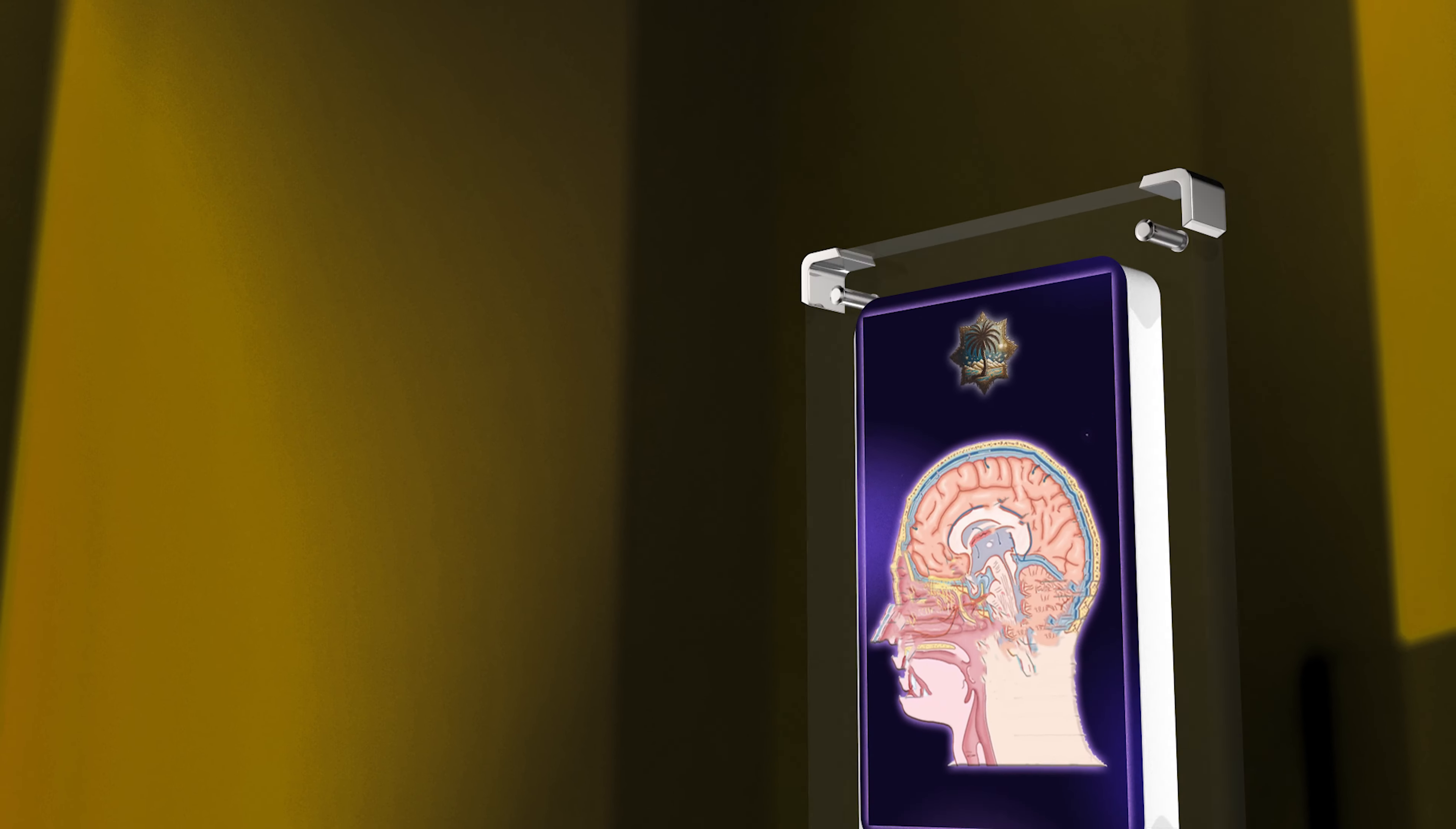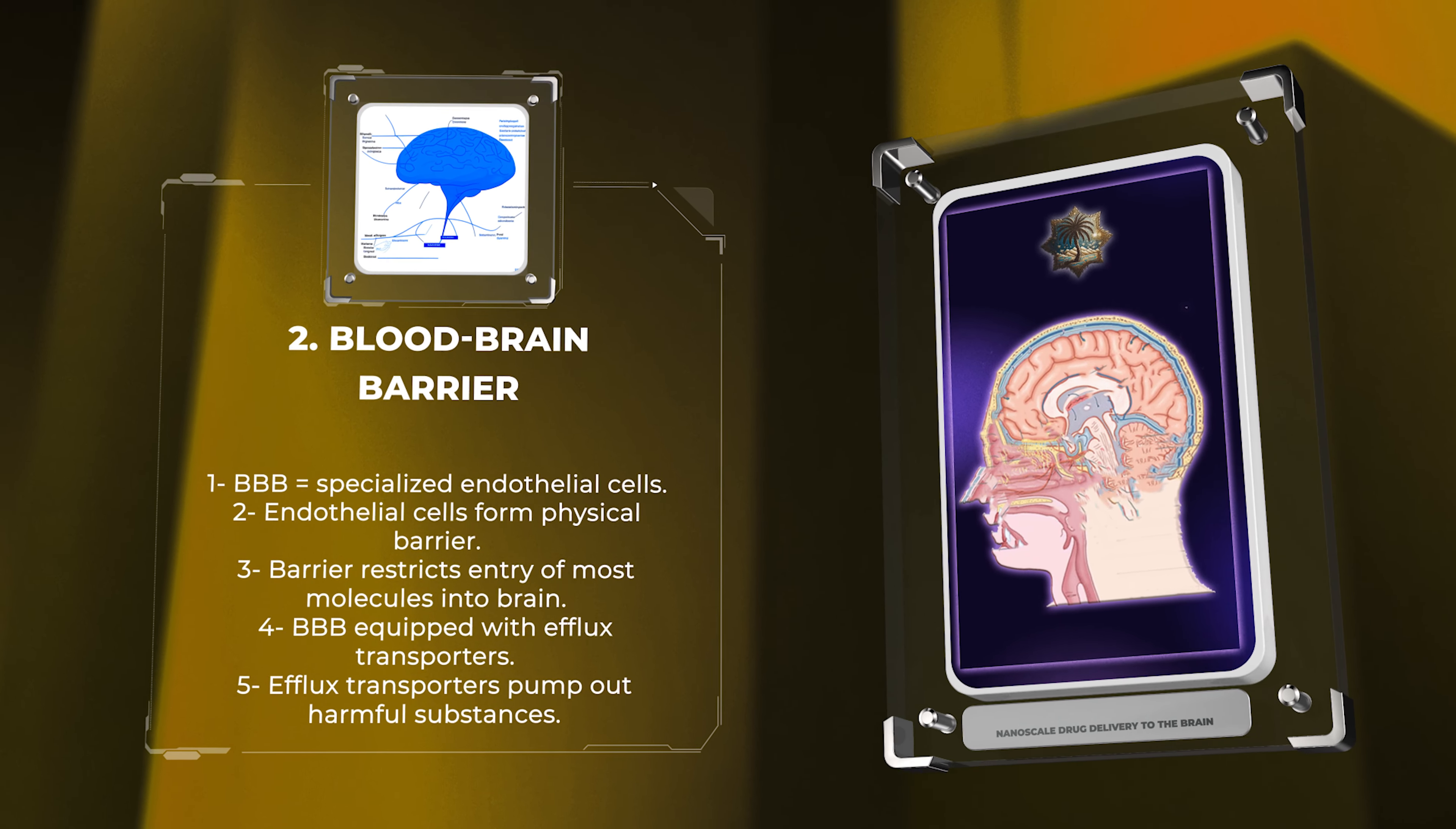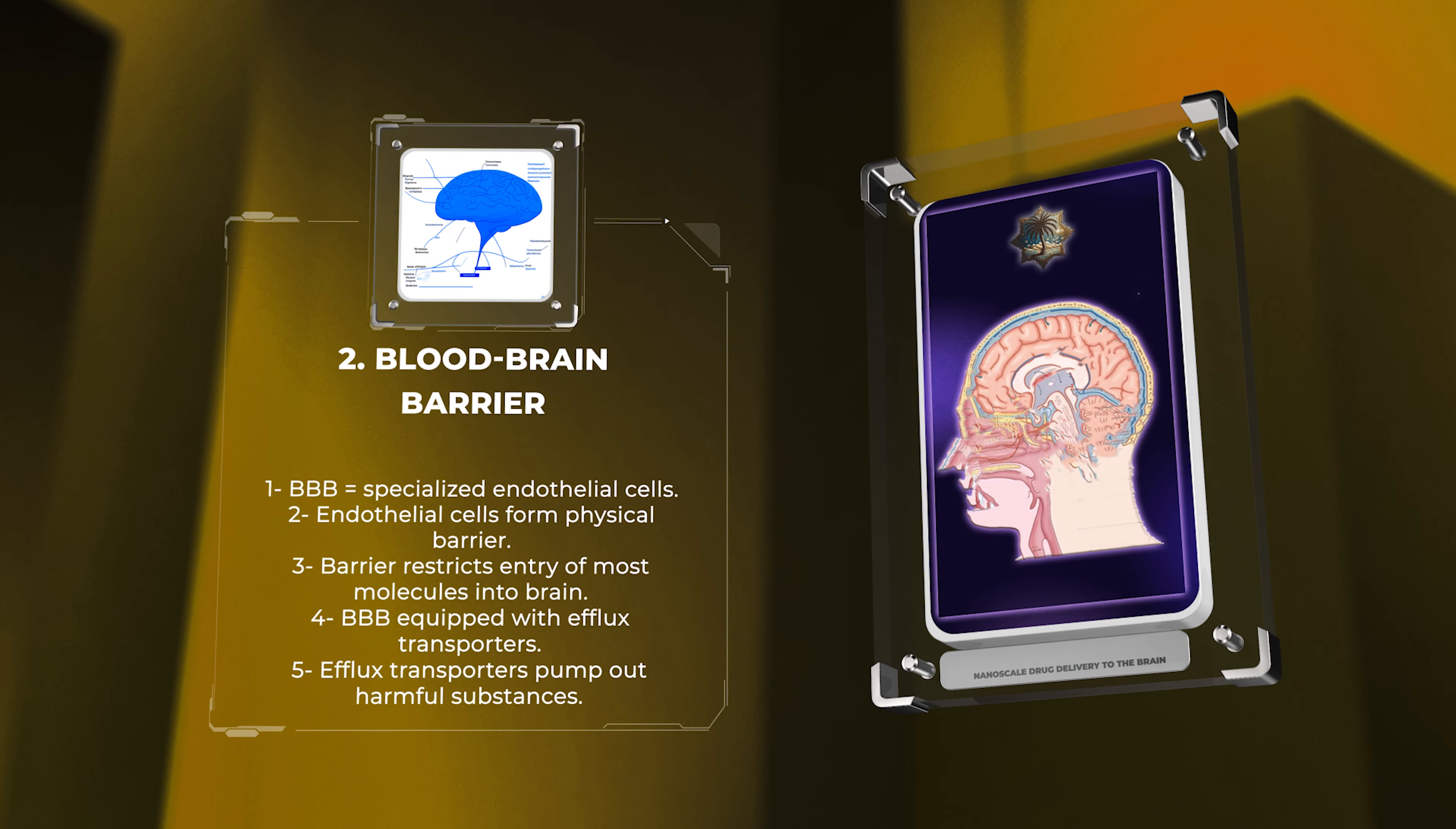The BBB consists of specialized endothelial cells that line the blood vessels in the brain. These cells are tightly connected by tight junctions, forming a physical barrier that restricts the entry of most molecules into the brain.